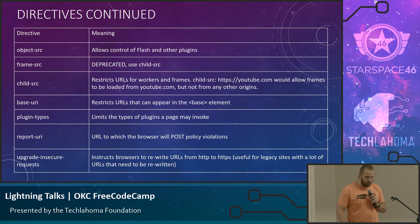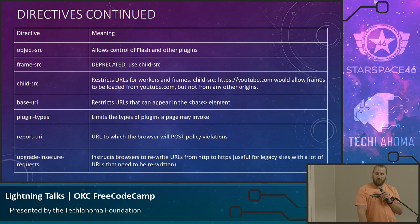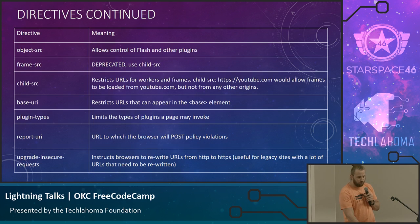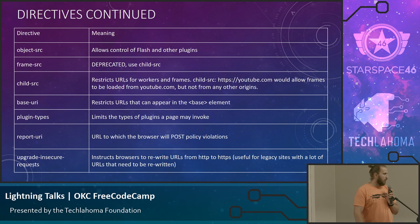The report-uri directive is another very important one. Basically, it allows us to specify a URL to which the browser will post policy violations for us to collect. The upgrade-insecure-requests directive is also really useful for sites where you may have a bunch of HTTP links that need to be upgraded — you can specify this keyword and it will upgrade those for you.